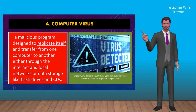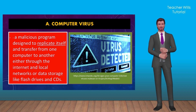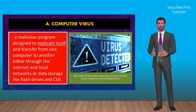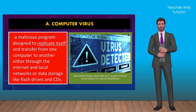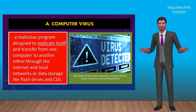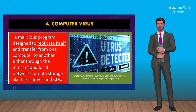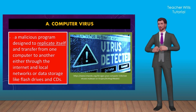The computer virus. A computer virus is a malicious program designed to replicate itself and transfer from one computer to another either through the internet and local networks or data storage like flash drives and CDs. It spreads like a real biological virus, wherein it attaches itself to a host program and infects other computers if it is received by a computer through the internet.